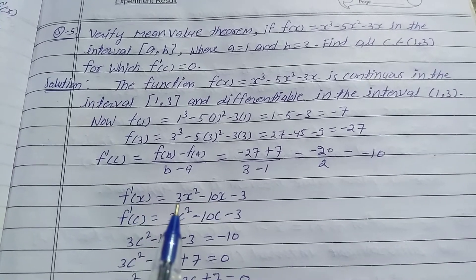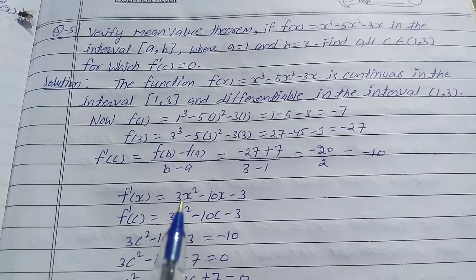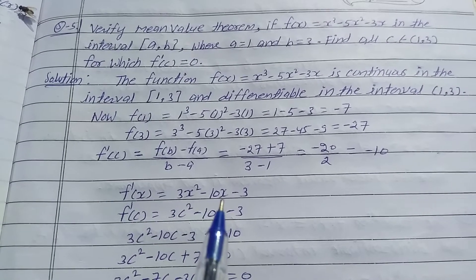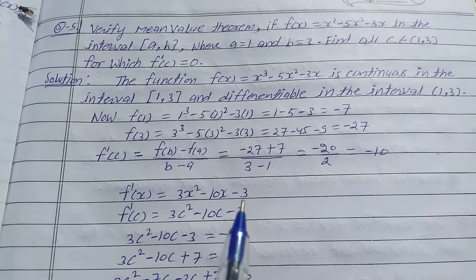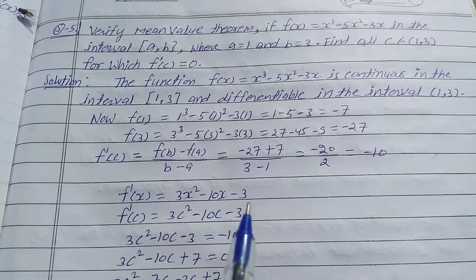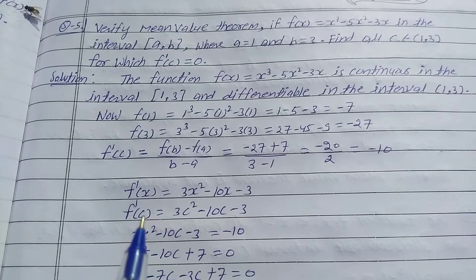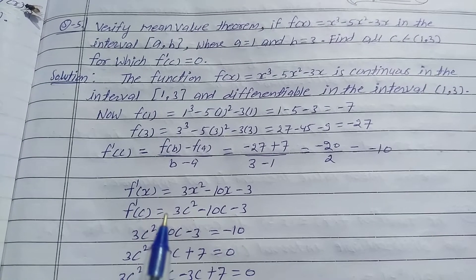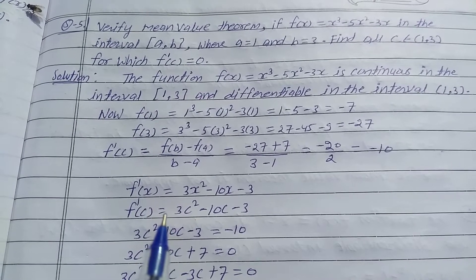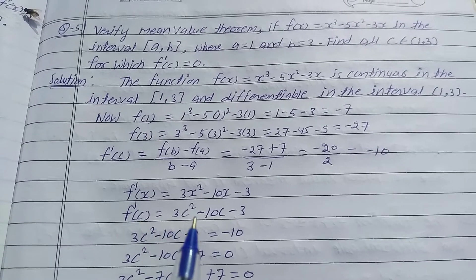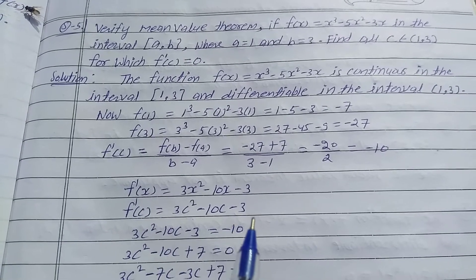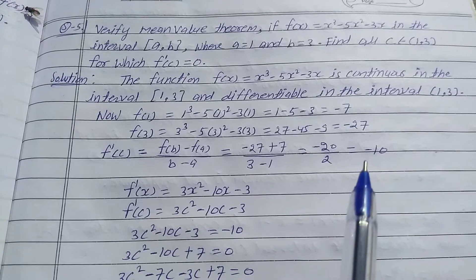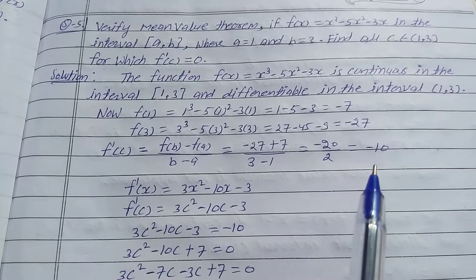Now differentiate the function: f'(x) = 3x² - 10x - 3. Then put x = c, so f'(c) = 3c² - 10c - 3.